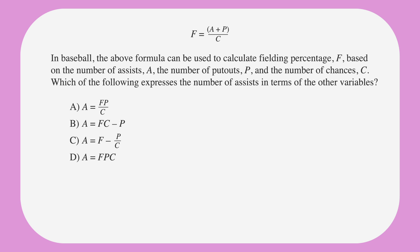Here's a question similar to what you might see on the real test. In baseball, the above formula can be used to calculate fielding percentage F, based on the number of assists A, the number of put-outs P, and the number of chances C. Which of the following expresses the number of assists in terms of the other variables? The answer choices are all algebraic expressions featuring four variables. We'll start by underlining the facts, circling the keywords, and labeling the answer choices.